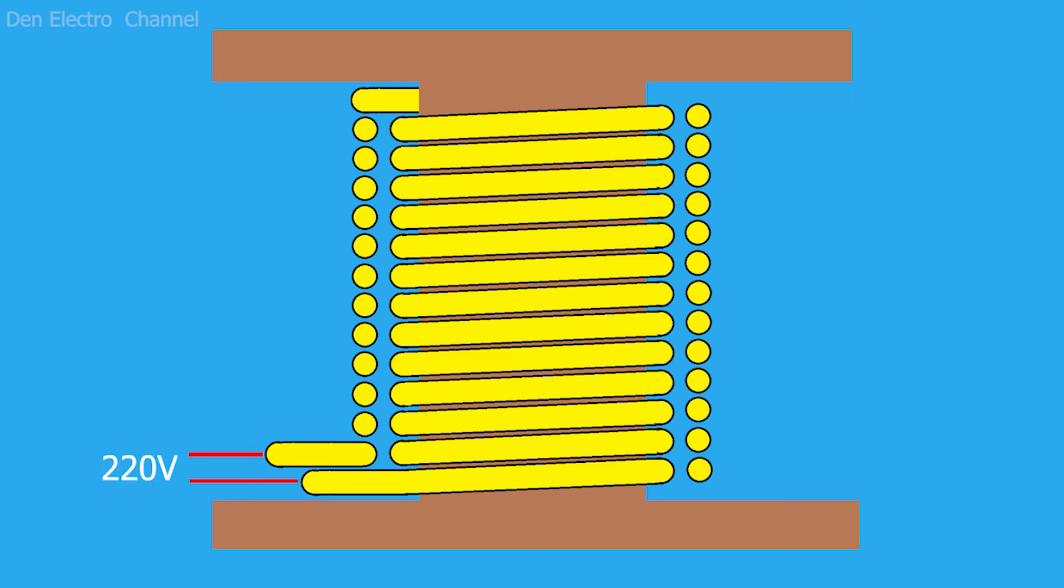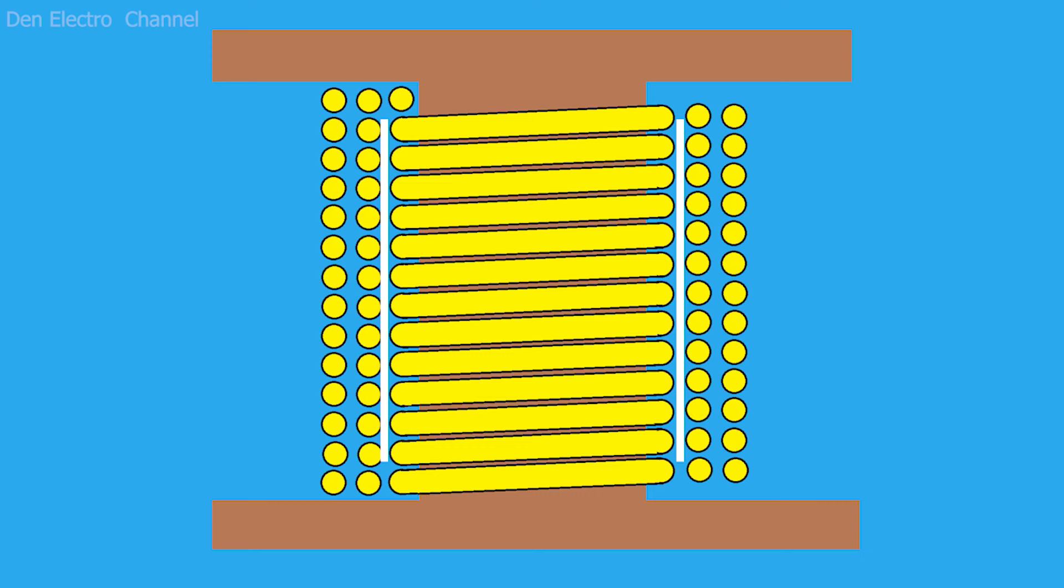In addition to this, each turn from the first layer will touch a turn from the second layer, where it can also penetrate the insulation. To prevent this from happening, additional insulation is sometimes added between the layers. This is usually either duct tape or paper. If there are even more layers of winding, then dielectric material is also placed between them.